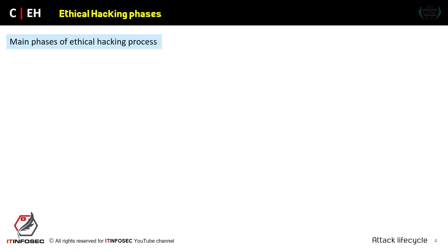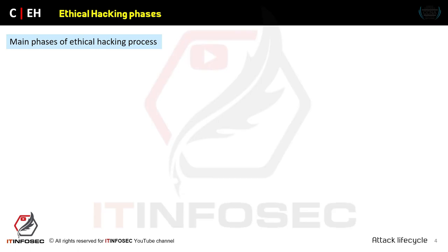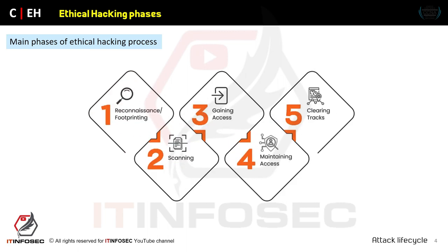When you want to perform the ethical hacking process, for example imagine you have an agreement with some organization where you should analyze the network for finding vulnerabilities and notify them for providing security. You will have to do five phases for performing this ethical hacking agreement. The first step is known as reconnaissance or footprinting.